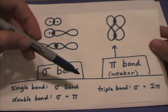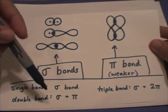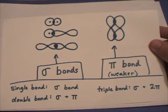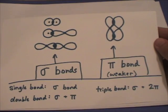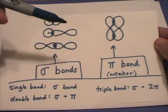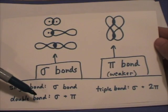A single bond is a sigma bond. A double bond is a sigma bond and a pi bond. And a triple bond is a sigma bond and two different pi bonds. So because a pi bond is weaker than a sigma bond, a double bond is stronger than a single bond but not twice as strong.